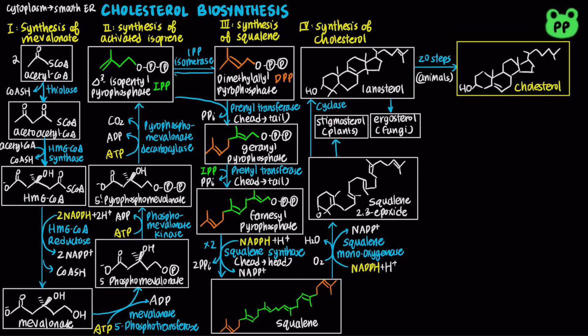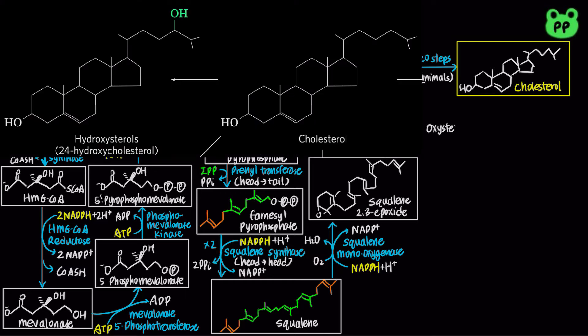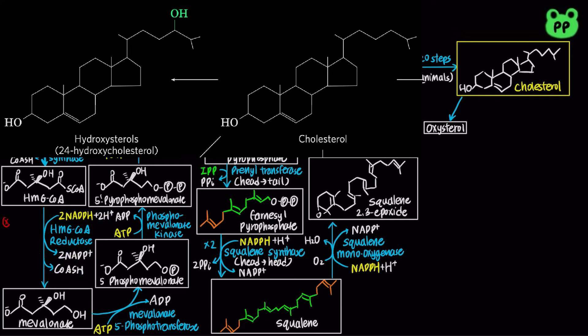Small quantities of cholesterol are converted to oxysterols, such as 25-hydroxycholesterol, which functions as a feedback inhibitor of cholesterol biosynthesis by stimulating proteolysis of HMG-CoA reductase, the committed step of the pathway. Cholesterol biosynthesis is also inhibited by AMP-dependent kinase, abbreviated as AMPK, which senses high AMP concentration, indicating low ATP concentration and low energy level, and therefore decreases anabolic pathways.